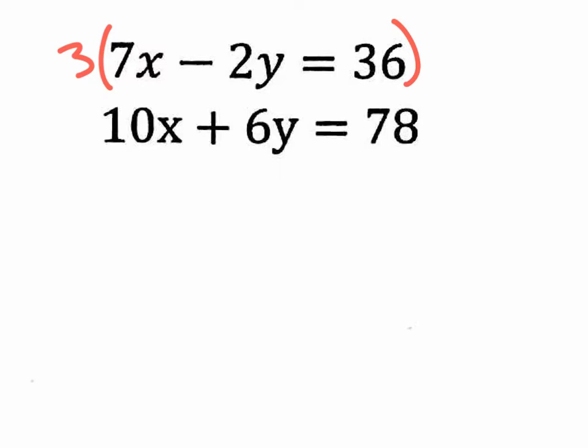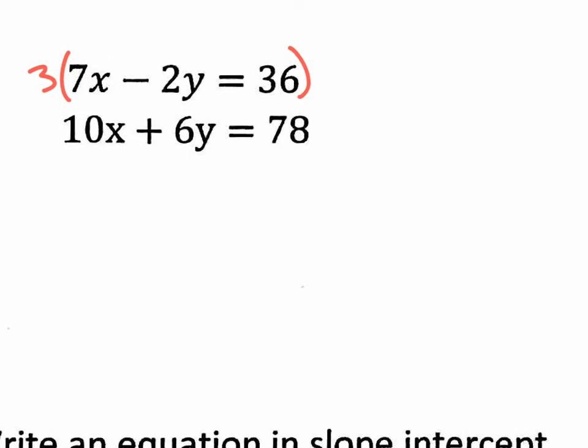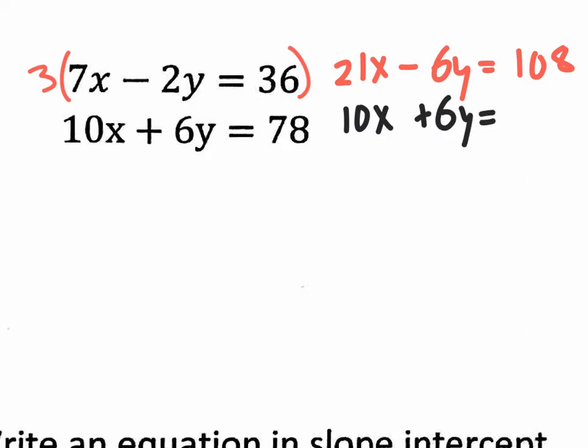So the top equation we're modifying by multiplying everything by three. So I'm going to have 21X minus 6Y equals three times 30 is 90. Three times six is 18, 90 plus 18 is 108. So 108, did the distributive property in my head. Anyways, we have that equation for the top. The bottom one, we're going to keep the same: 10X plus 6Y equals 78. That's going to be ugly, huh? Whatever. Let's go for this.